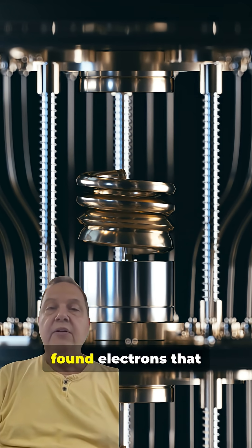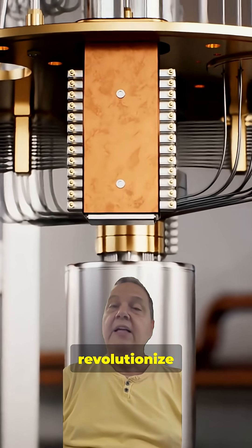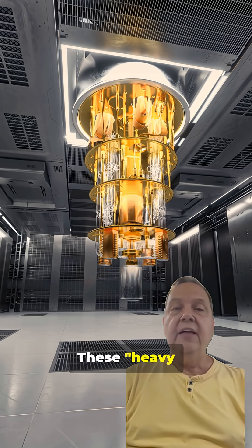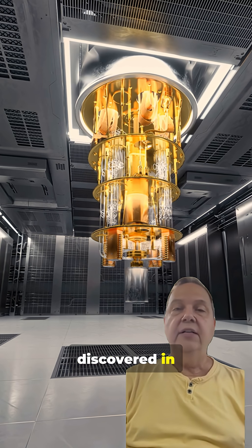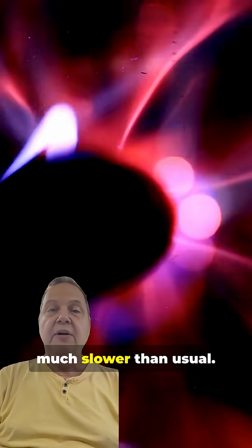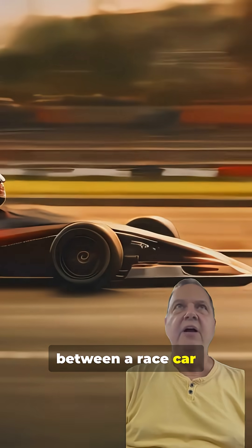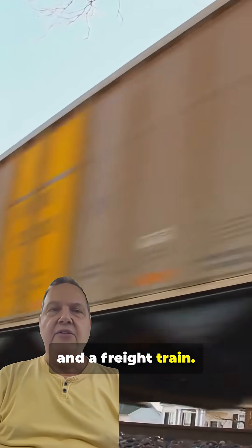Scientists just found electrons that are thousand times heavier than normal and they might revolutionize quantum computing. These heavy electrons were discovered in special materials where electrons move much slower than usual. Think of it like the difference between a race car and a freight train.